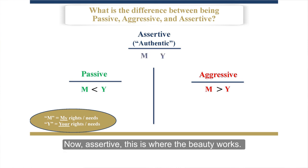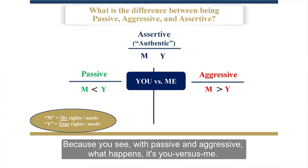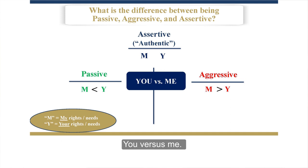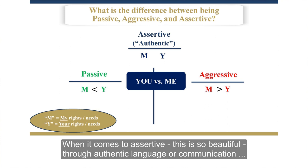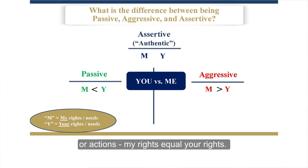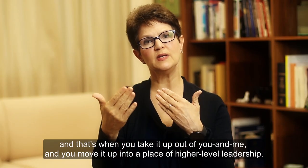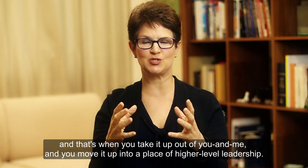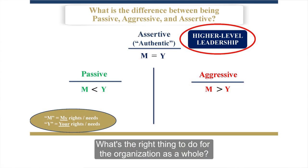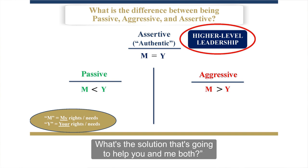Your rights are not being met. Now with assertive — this is where the beauty works. With passive and aggressive, it's you versus me. But with assertive, or authentic communication and actions, my rights equal your rights. They are equal. That's absolutely foundational. And that's when you take it up out of you and me, and you move it into a space of higher-level leadership — we're in this together. What's the right thing to do for the organization as a whole? What's the solution that's going to help both of us?